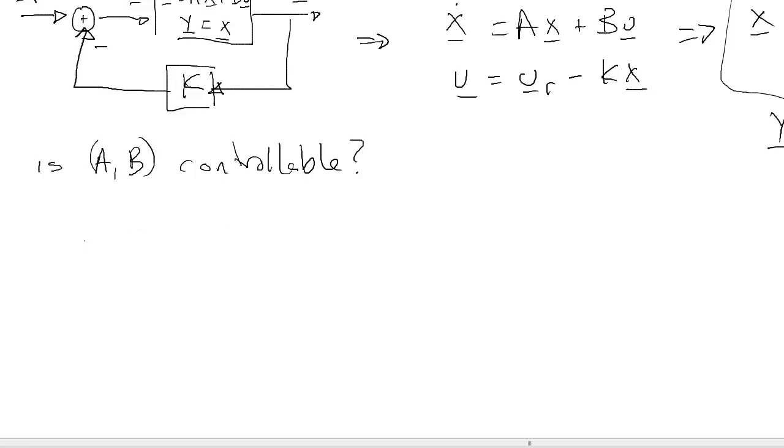We find the controllability matrix. We can do this in MATLAB using rank(ctrb(A,B)). This ends up giving us two, which is full. So the system is controllable.